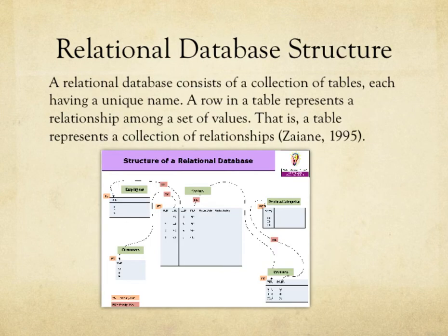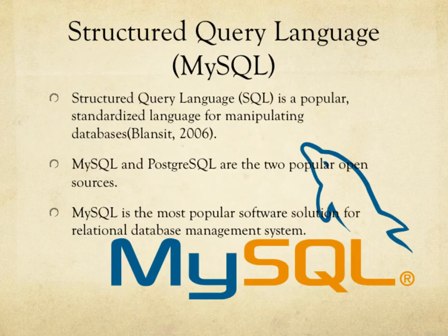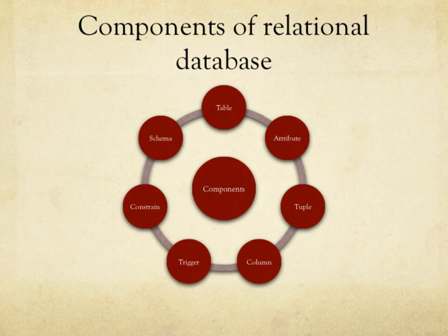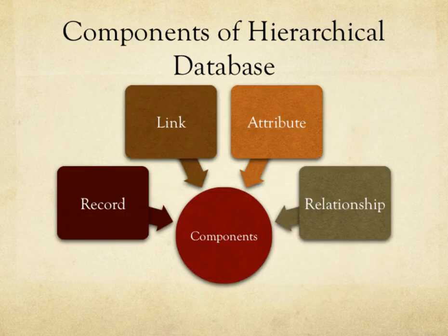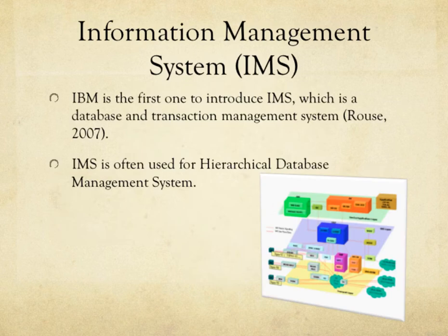Hierarchical databases and network databases are very similar. They both consist of a collection of records connected to each other through links. Information Management System (IMS) is the software used for hierarchical databases, and DBTG is the one for network databases. Object-oriented databases store objects.